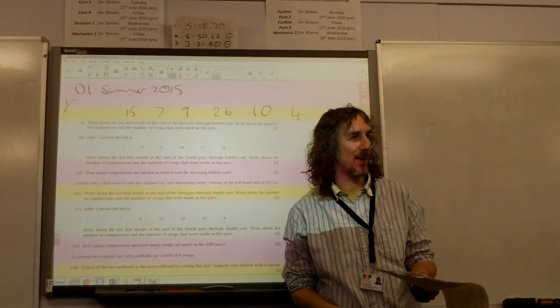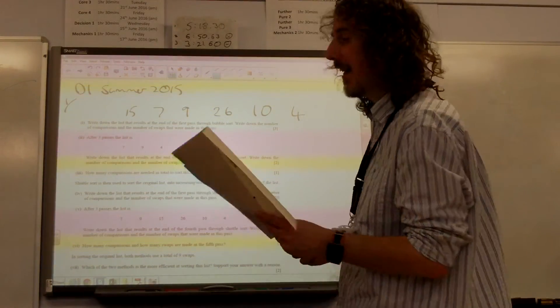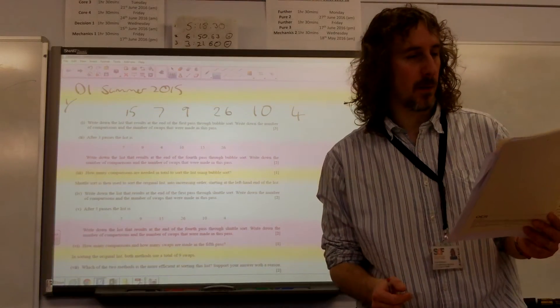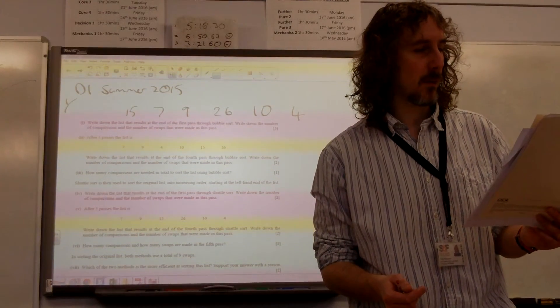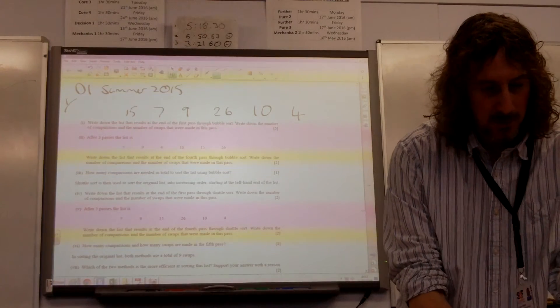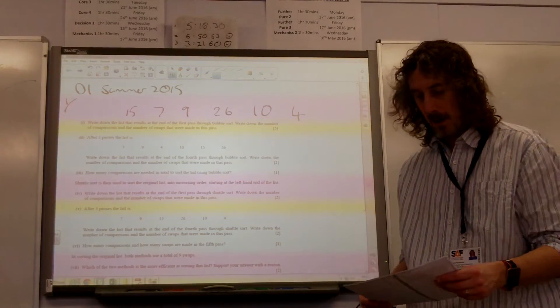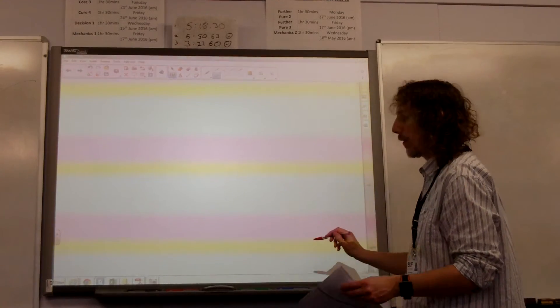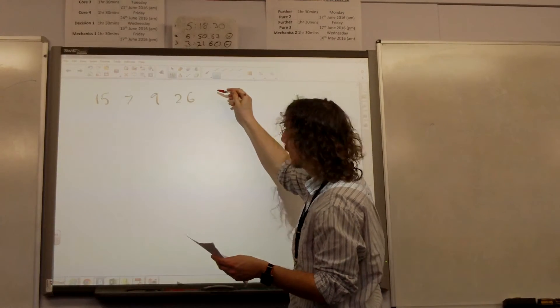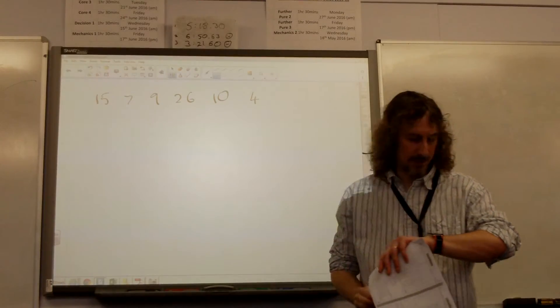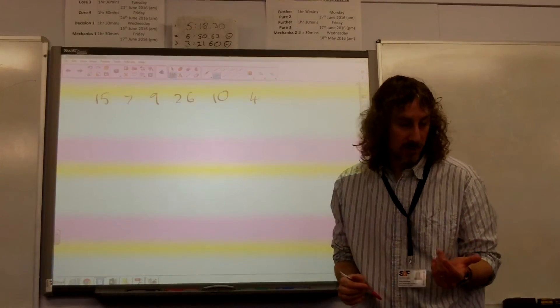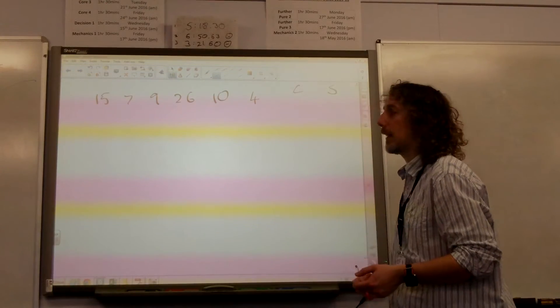This is brought to you by Matt's Day with complete professional perfection. Write down the list that results at the end of the first pass through bubble sort. So after the completion of the first pass, the largest value would be right in the list. Write down the number of comparisons and number of swaps. We're asked to record the number of comparisons and swaps so I'm going to do a little tally as I do it.